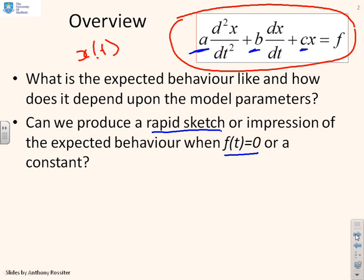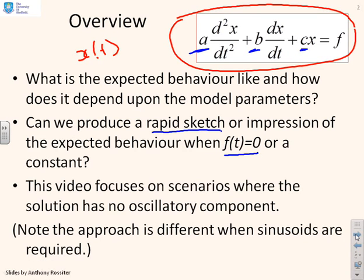We're actually only going to deal with f(t) as a constant because 0 is an alternative form of a constant. This particular video is looking at scenarios where there's no oscillatory components, so there's no sinusoids in x(t). Sinusoids will be dealt with in later videos.